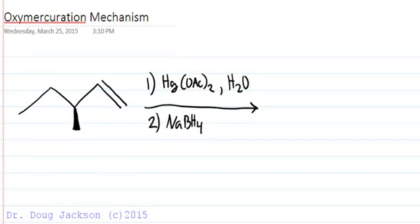Okay let's have another look at oxymercuration. If we take a look at the alkene that we've drawn, it has an existing chiral center that we've shown with the wedge here, and so we are going to have to pay attention to that as we proceed with the mechanism.